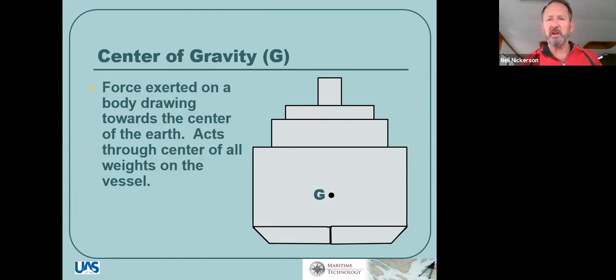From its locations, we can calculate where the center of gravity is. In calculations, we label it as G, capital letter G. And it's the center through where all the weights are pushing down, and they're pushing down towards the center of the earth. Essentially, earth is pulling all those weights towards the center, but that's where it's acting through, acting through the center of gravity of our vessel.